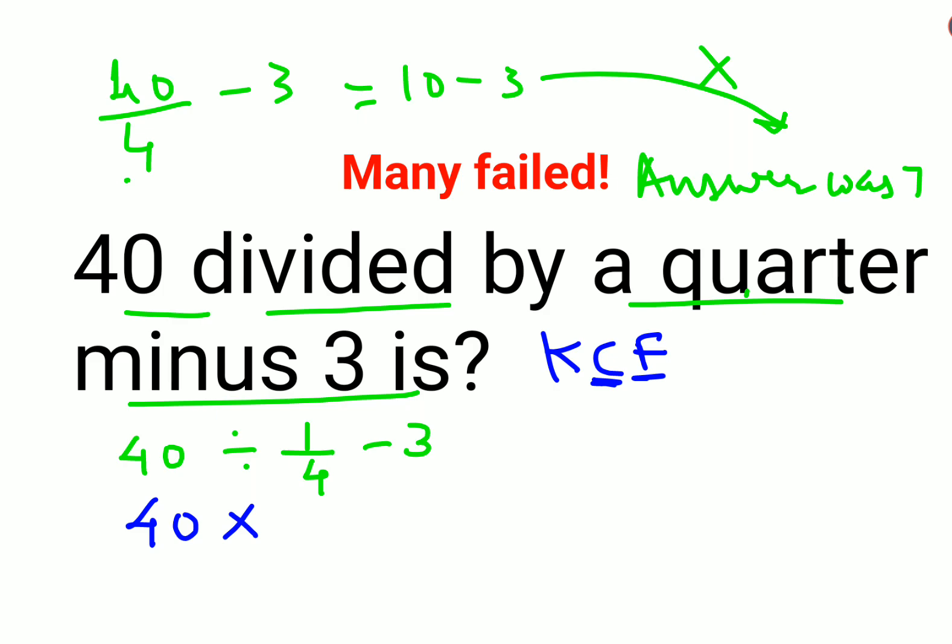So reciprocal of 1 upon 4 is 4. So the answer comes out to be 40 into 4, which gets you 160 minus 3. Answer comes out to be 157.